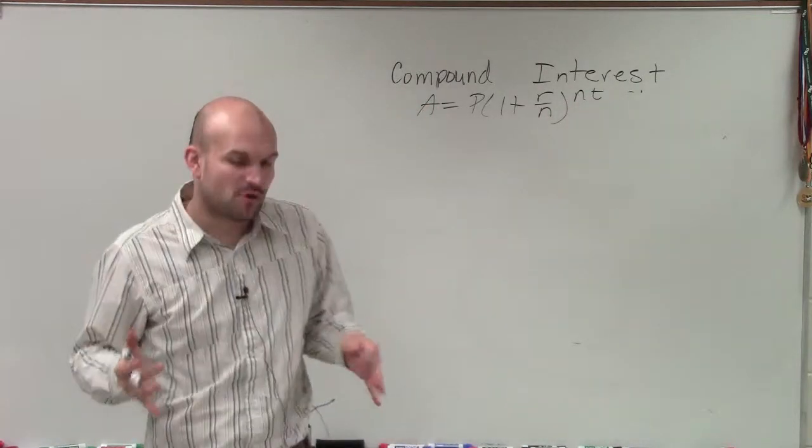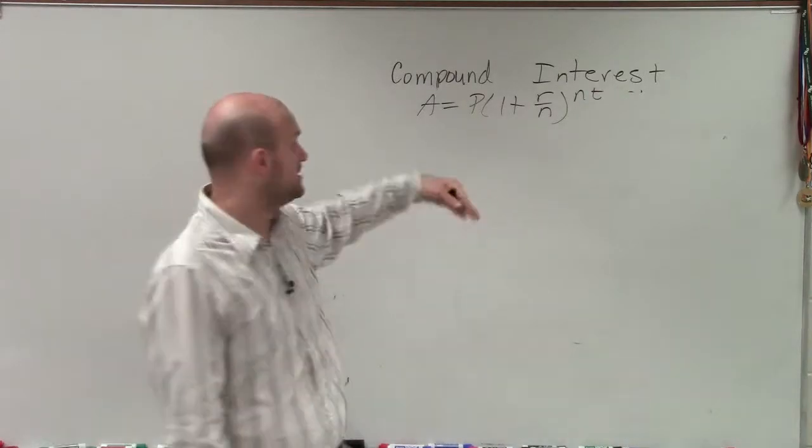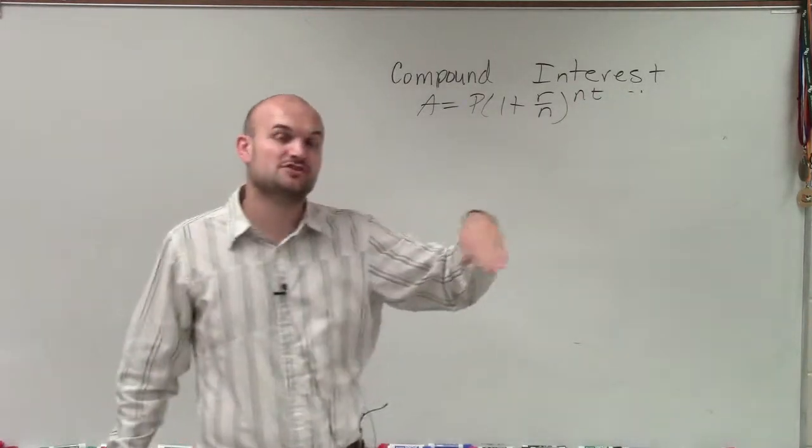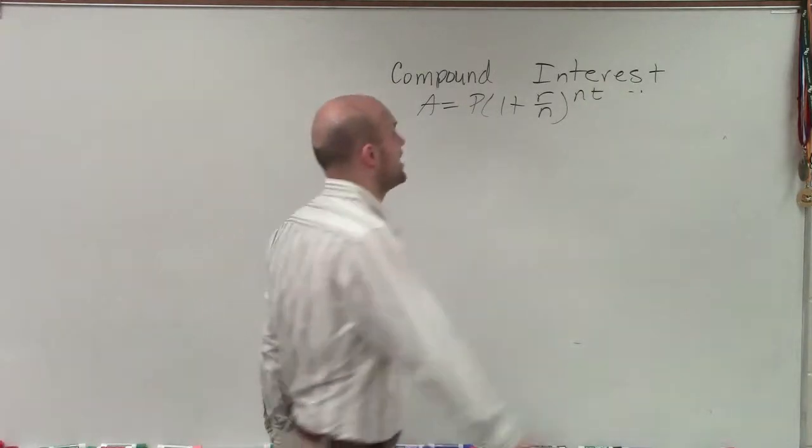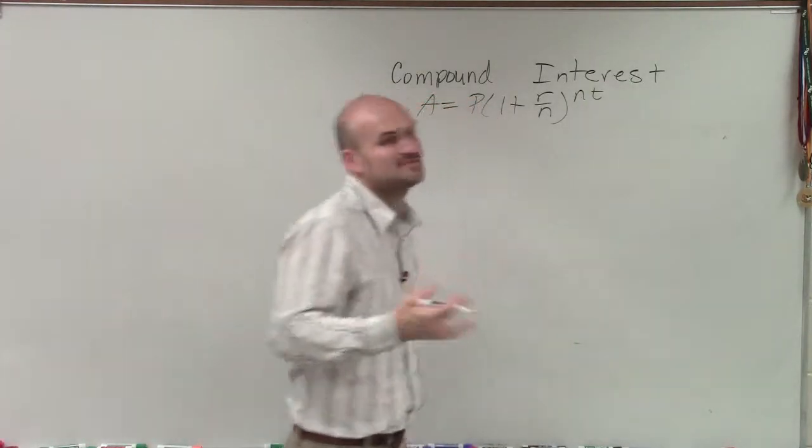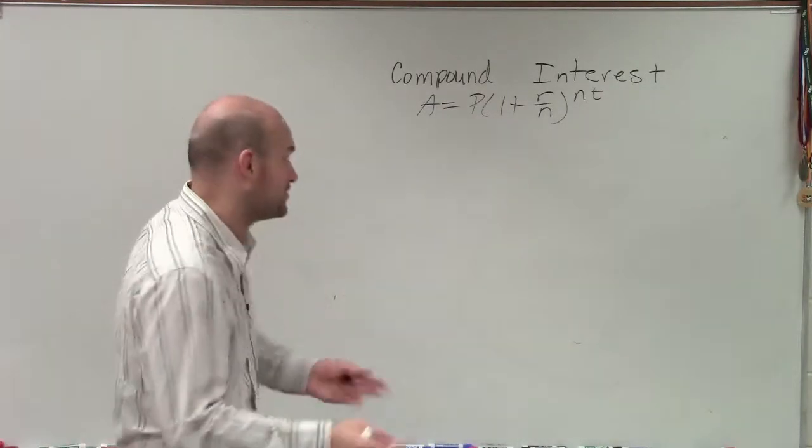And kind of talk a little bit more about the compounding, because remember, A represents our final value, P represents our initial investment, R represents our interest rate—our annual interest rate in decimal form—T represents the number of years, and N represents how many times we're going to compound something per year. We're dealing with an annual interest rate and how many times we're going to compound per year.